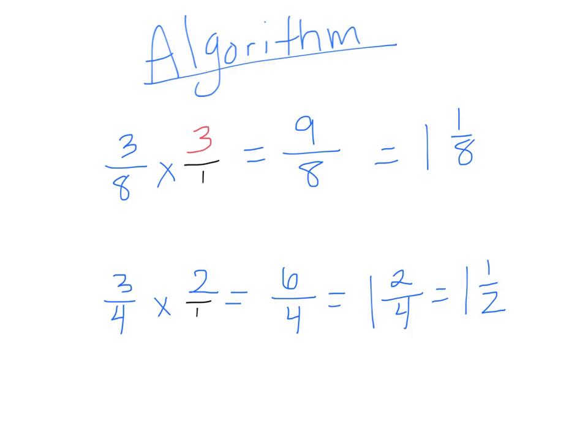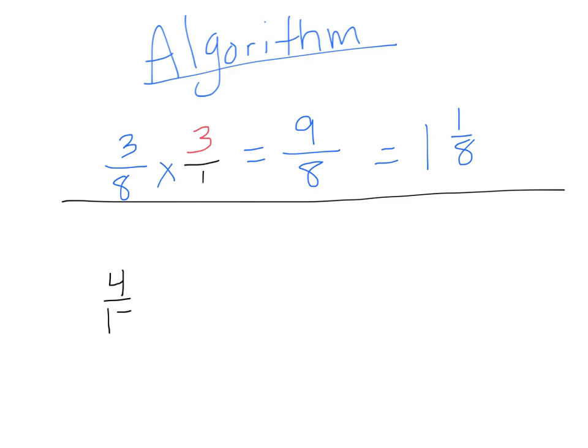We'll do one more just to practice. We're going to do 4 fifteenths times 5. Now, remember, I have my whole number. I'm just going to 5 over 1, make it a fraction, and now I'm going to multiply straight across. 4 times 5 equals 20, and 15 times 1 equals 15. Now, that's not its simplest form. I still need to reduce. 20 and 15, well, I know there's one group of 15 and 20, and then that would give me 5 left over. My denominator would stay 15, but 5 and 15 can reduce. So, I'll keep my whole number 1. 5 goes into 5 one time, and 5 goes into 15 three times. So, my answer would be 1 and 1 third.